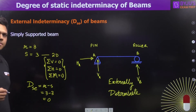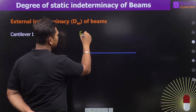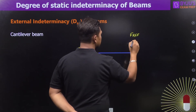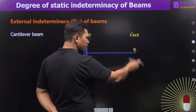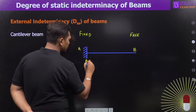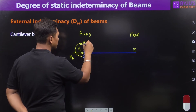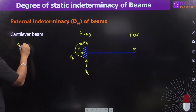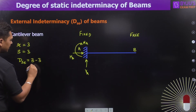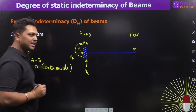For a cantilever beam, end A has a fixed support providing three reactions — vertical, horizontal, and moment — and end B is free with no resistance at all. Number of unknowns = 3, number of equilibrium equations = 3, so the degree of static external indeterminacy = 3 minus 3 = 0. This is again a determinate structure.